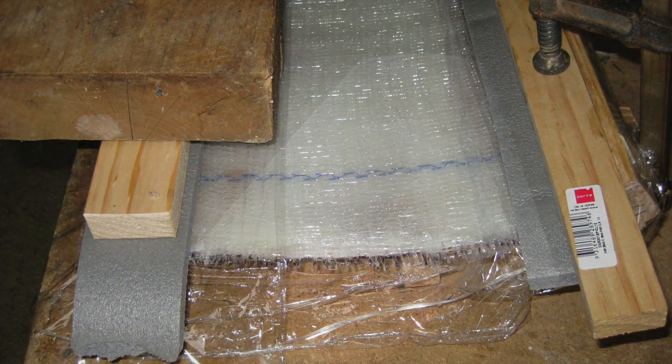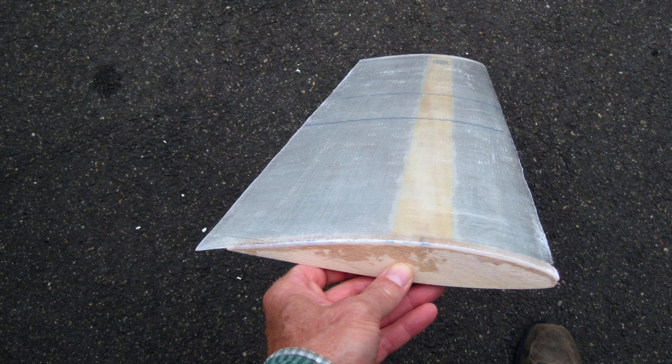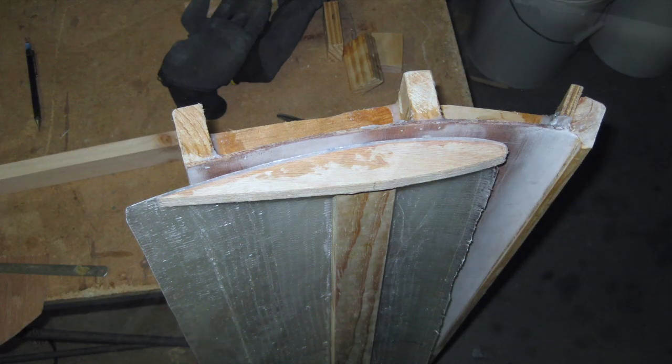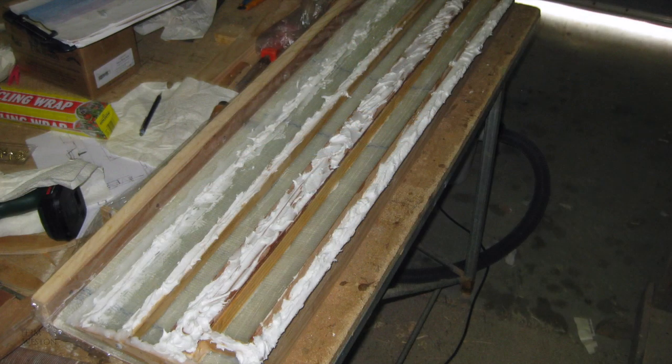I created the skins of the foils by laying up two layers of 600g bi-axial in the plywood moulds I made. It's all done with epoxy resin.